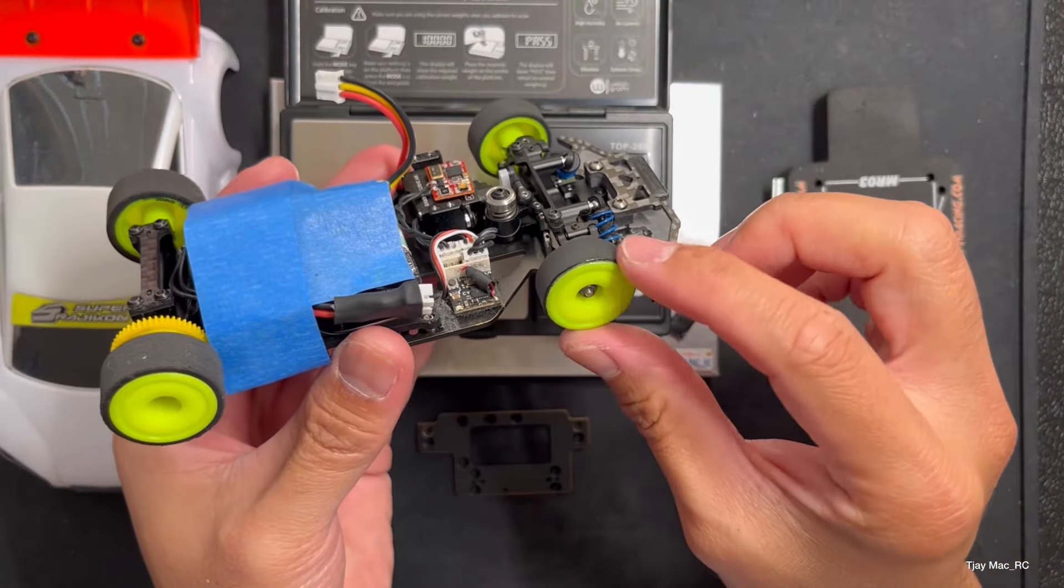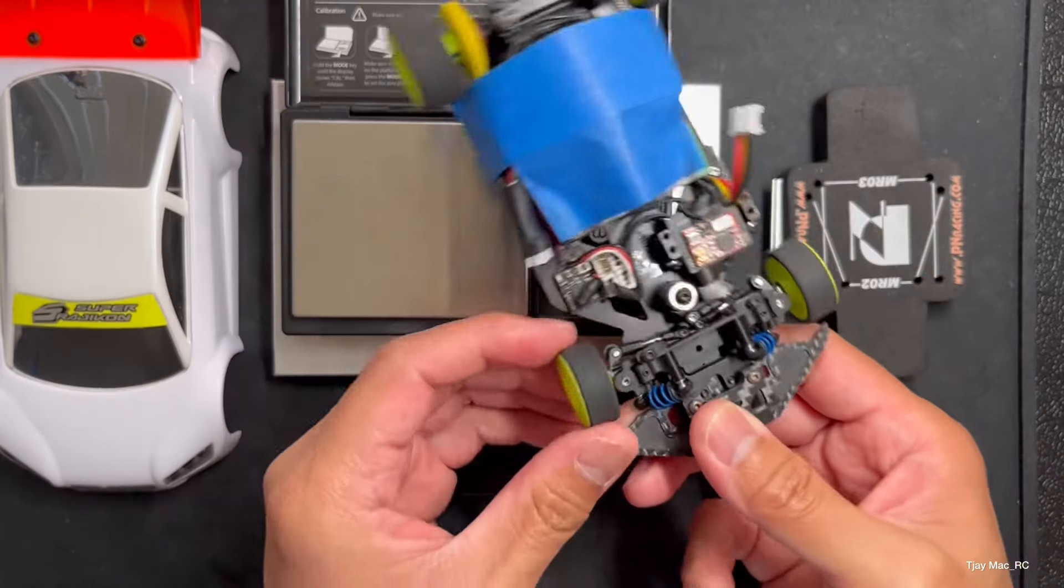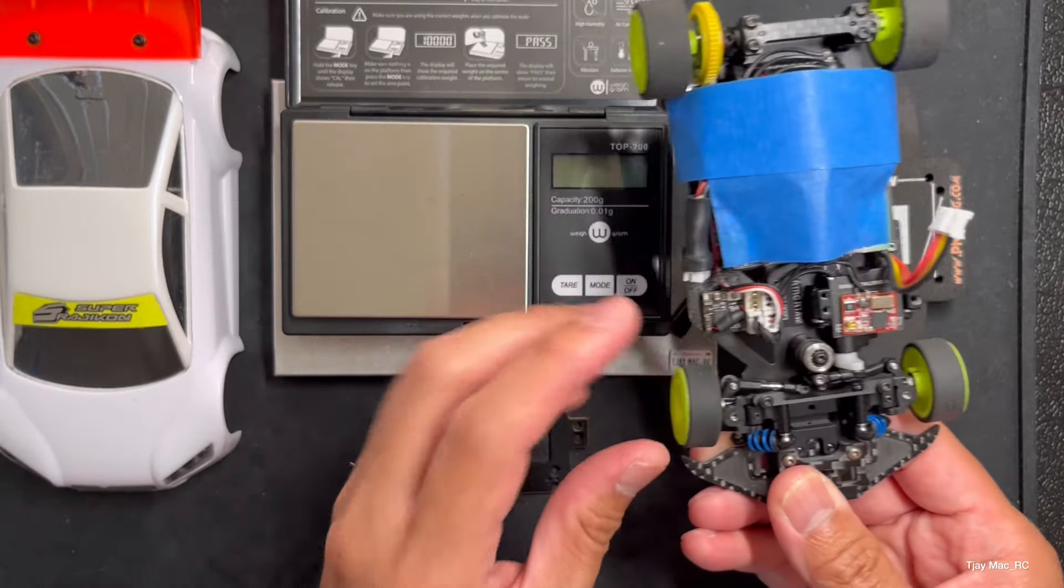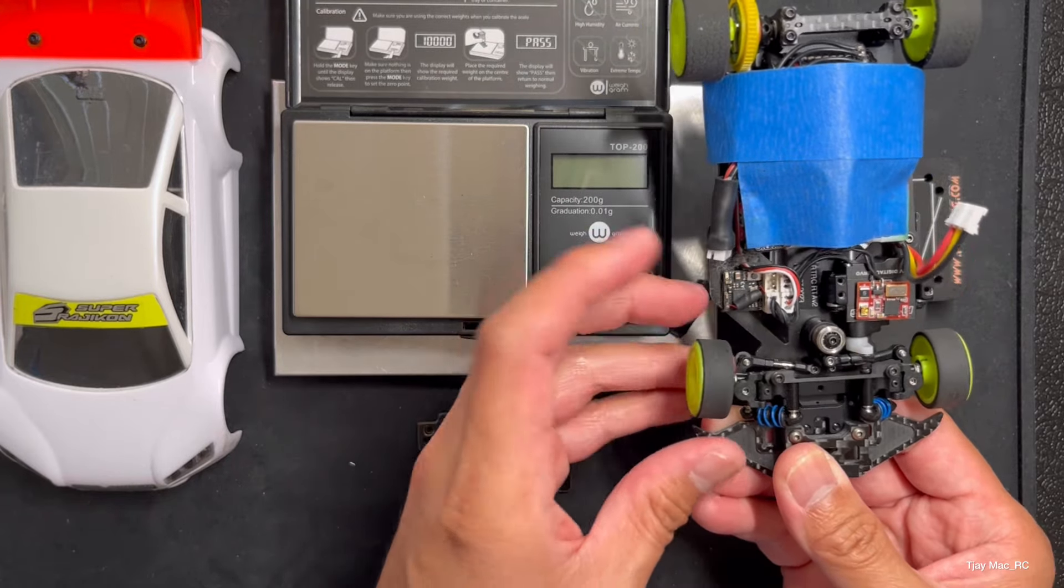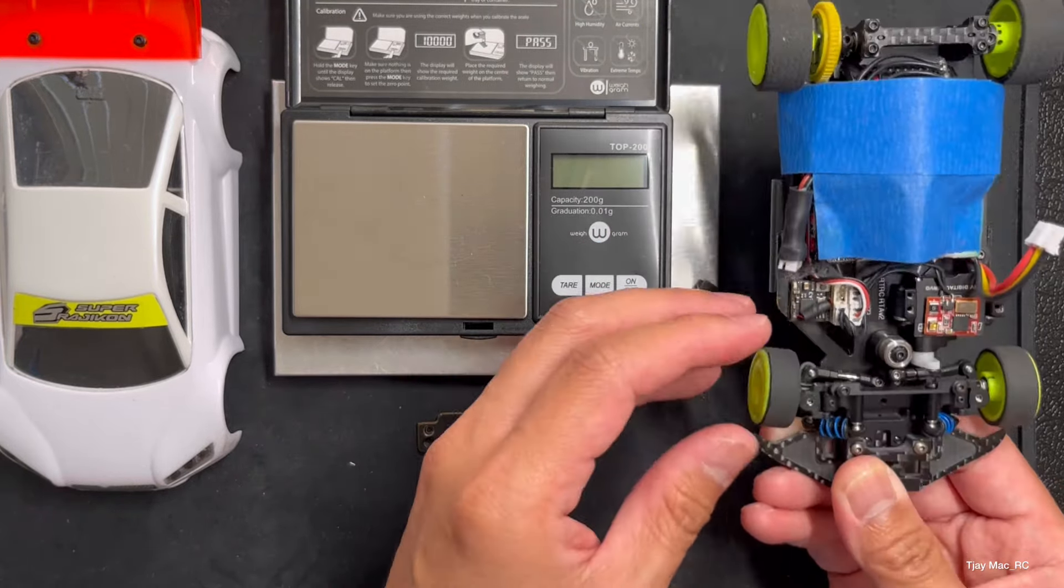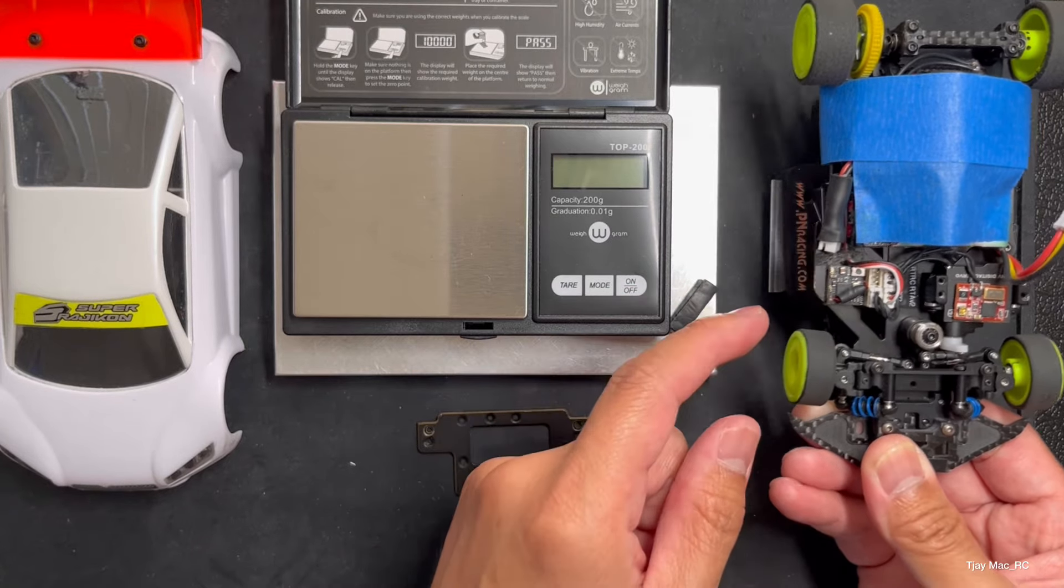After gluing the sidewall of the front tires yesterday, took it to the track and no traction roll, and the car never felt like it was on the edge of traction rolling. So it worked good gluing the sidewall.